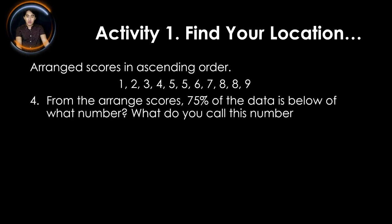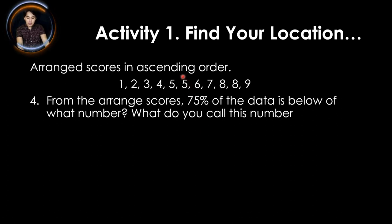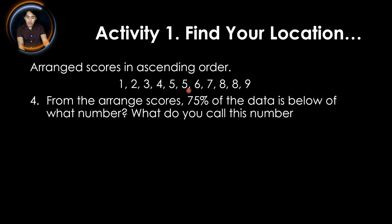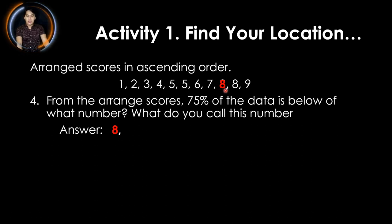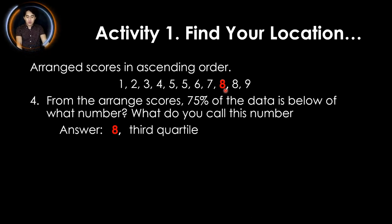For task 4, from the arranged scores, 75% of the data is below what number? Again, the second 5 is our 50% of the data. Therefore, the 75% of the data is found in the upper half: 6, 7, 8, 8, and 9. The middle value is the first 8, and that is the 75% of the data. What do you call that number? That is the third quartile.